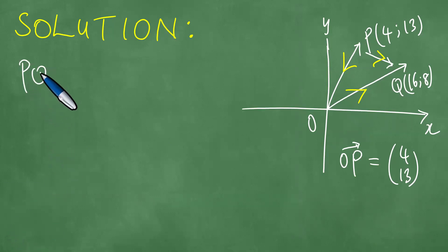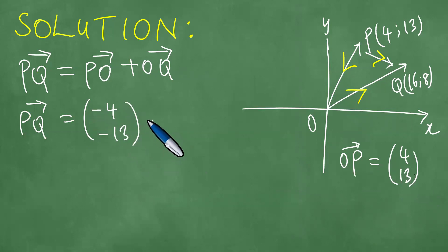We want to move from P to Q. To do that, we move from P to O, and then move from O to Q. From P to Q equals P to O plus O to Q. We know that OP is 4 and 13, so P to O is the opposite, which is minus 4, minus 13. If we move from O to Q, that is exactly 16 and 8.